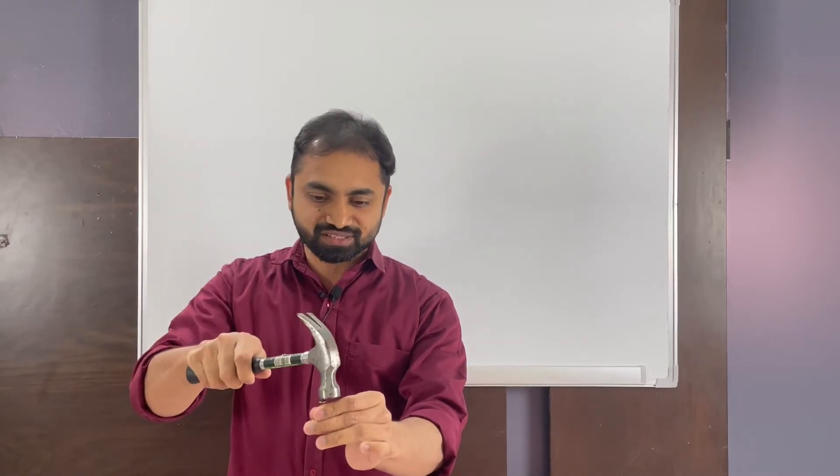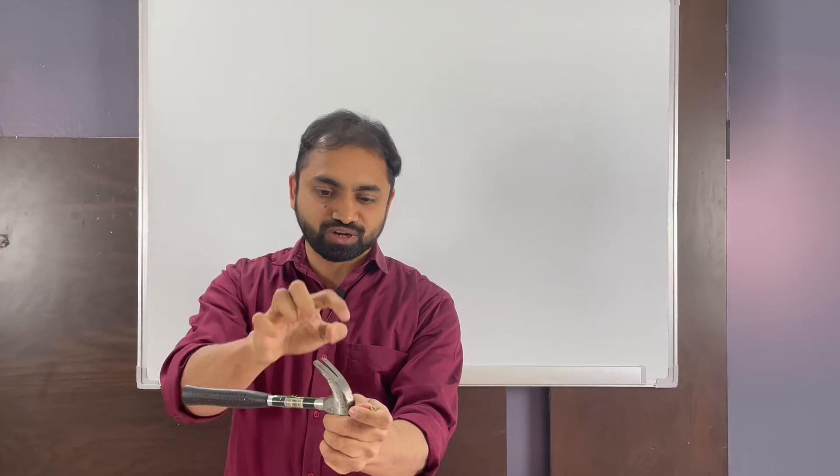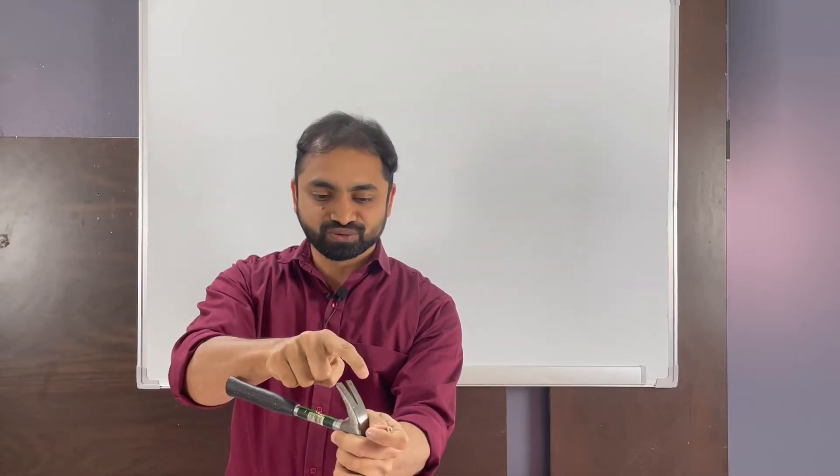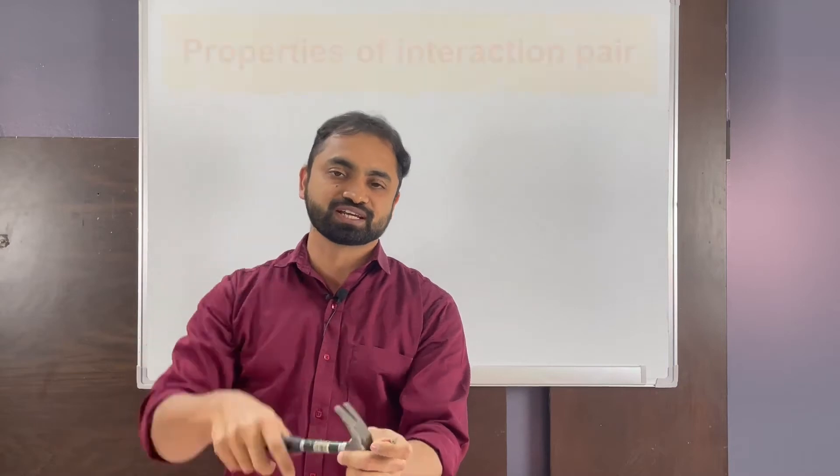Forces always act in pairs called interaction pairs, that is action and reaction. Newton's third law is applied when two systems interact. For example, when this hammer applies a downward force on this nail, then the nail will apply an equal upward force on the hammer. If the hammer applies a 50 Newton force on the nail downwards, then the nail will apply a 50 Newton force on the hammer in the upward direction.